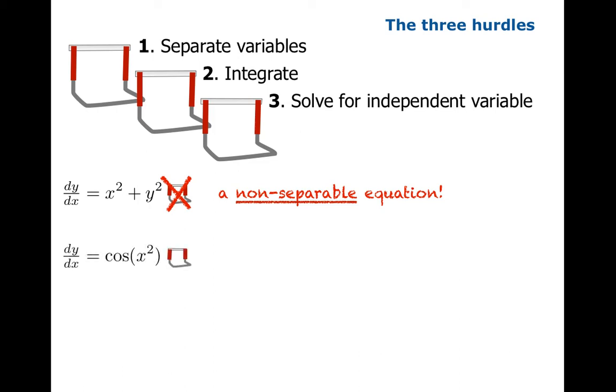But even if you get over the first hurdle you might still run into trouble. So look at this equation dy dx equals cosine of x squared. This differential equation is separable because you can get dy on one side and cosine x squared dx on the other.